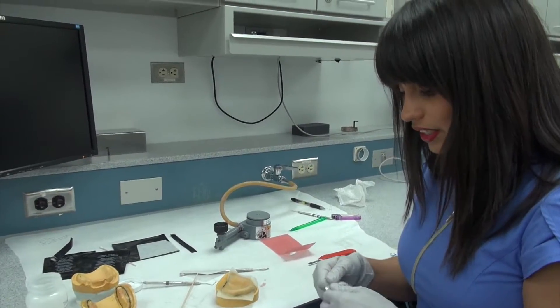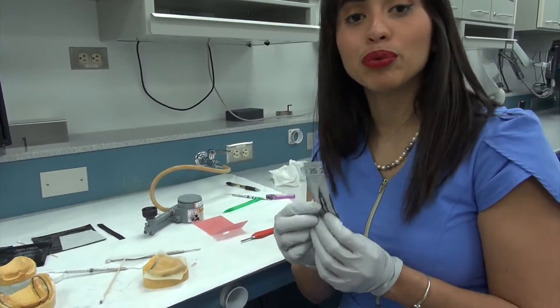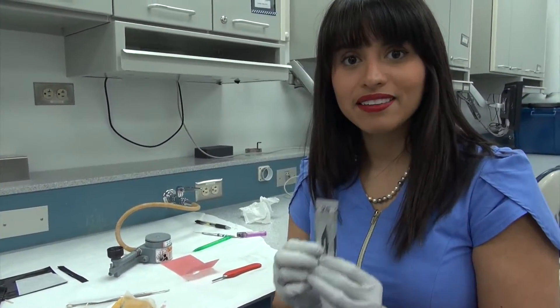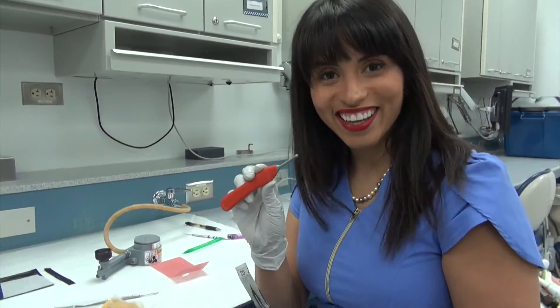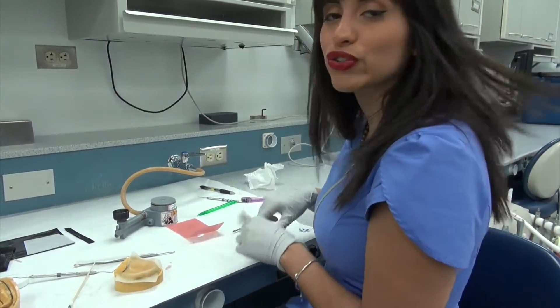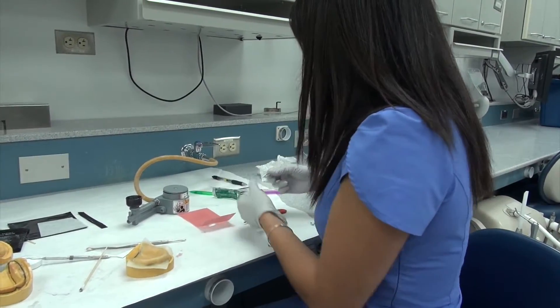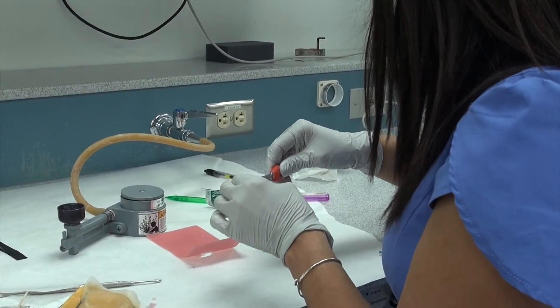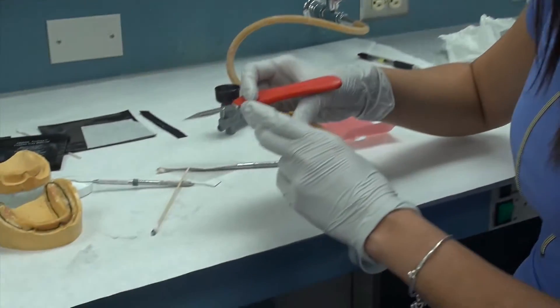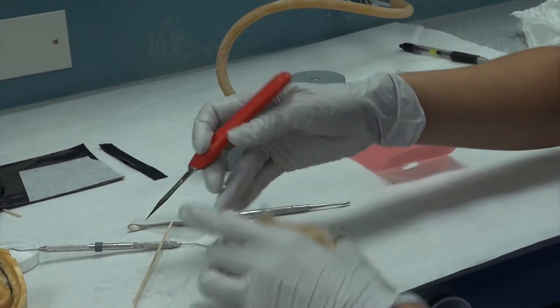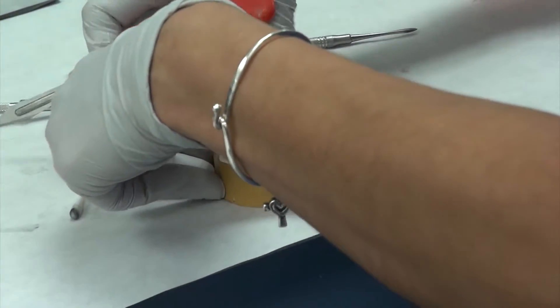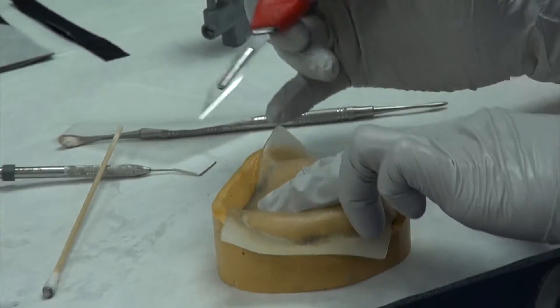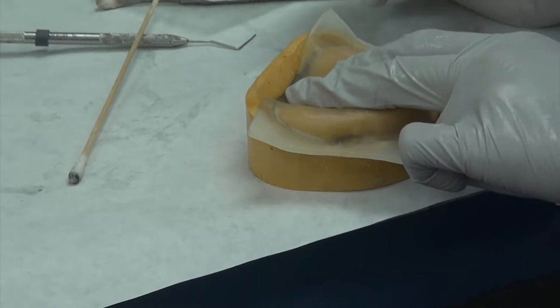Now once you've done that, you can use a brand new 25 blade on a red handled surgical knife, also known as the bar parker. And you want to make sure that your edges meet your outline.